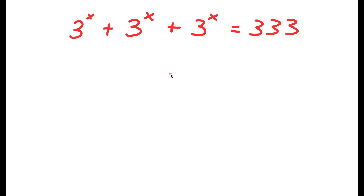In this problem, I have 3 to the power of x plus 3 to the power of x plus 3 to the power of x is equal to 333.